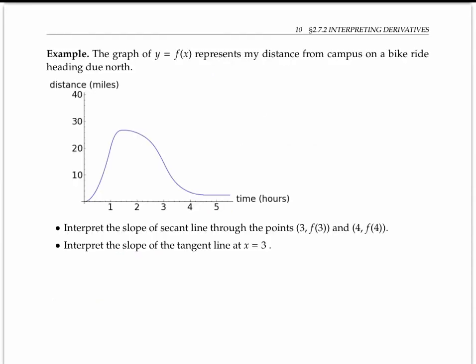One of the most famous contexts for interpreting derivatives is problems involving motion. So let's say I'm on a bike ride, heading straight north from campus. And let's suppose that y equals f of x represents my distance from campus. So x is the time in hours, and y or f of x is my distance in miles, the distance north of campus.